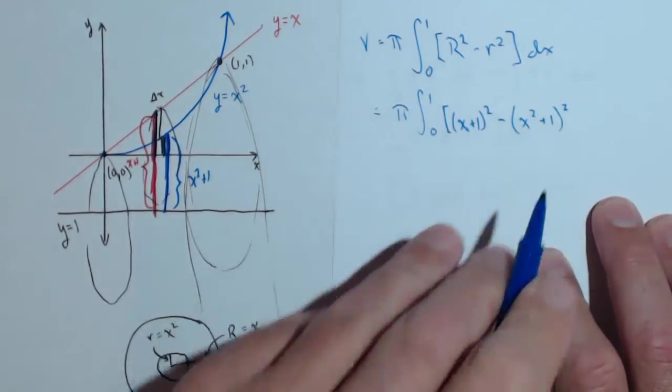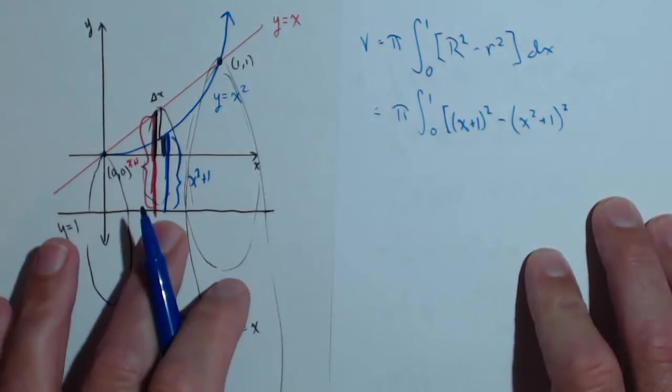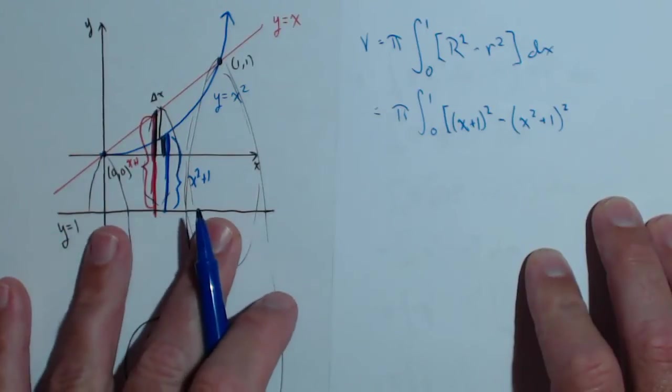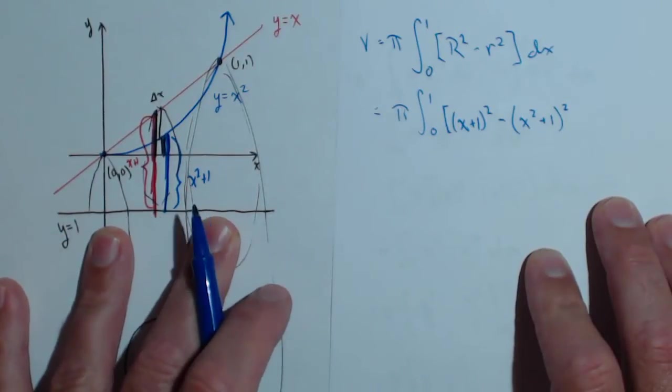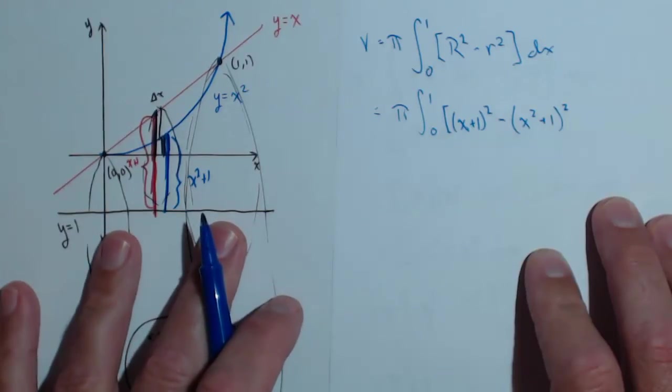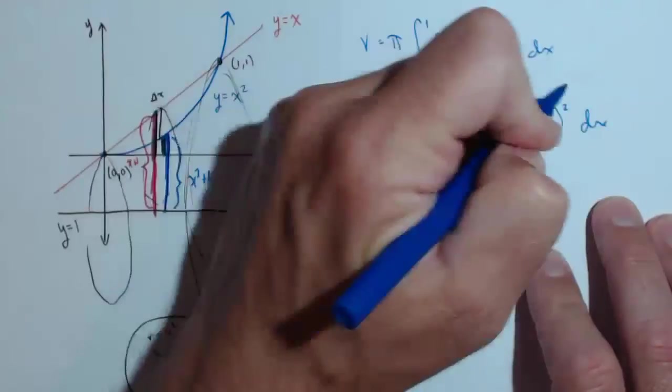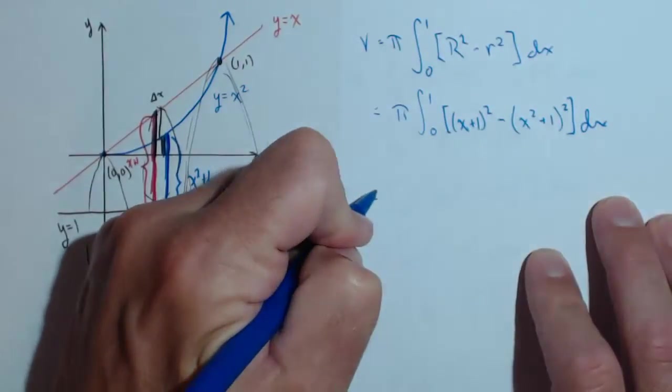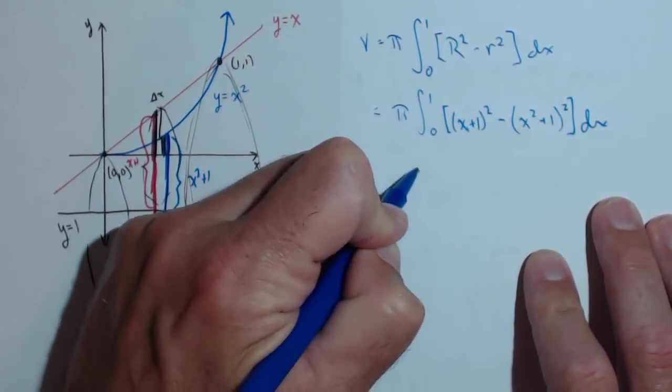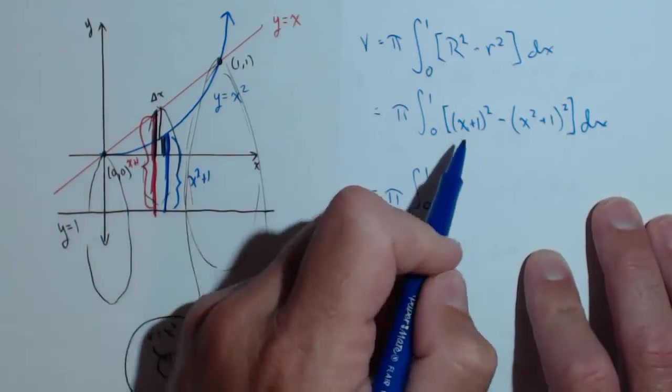So again, those plus 1s came from the fact that we were going around the line y equals 1. So what you do is when you're going around a horizontal or even a vertical line that's other than your axes, you need to identify what your new radius is. Let's simplify this a little bit because it's actually not going to be a terrible integral.